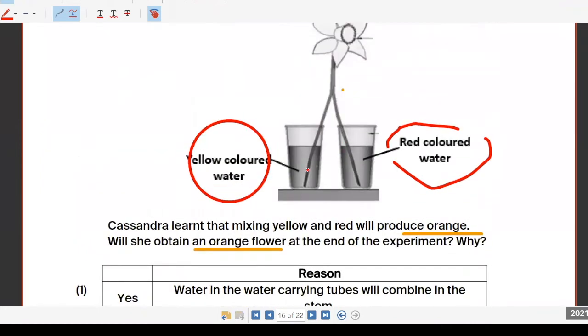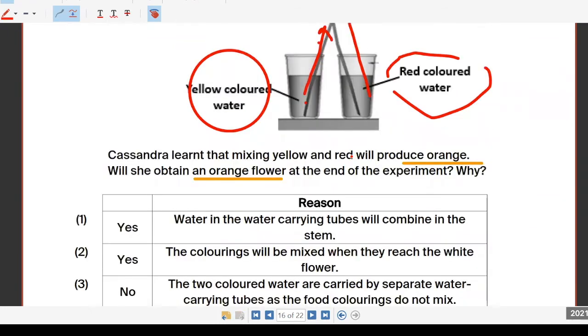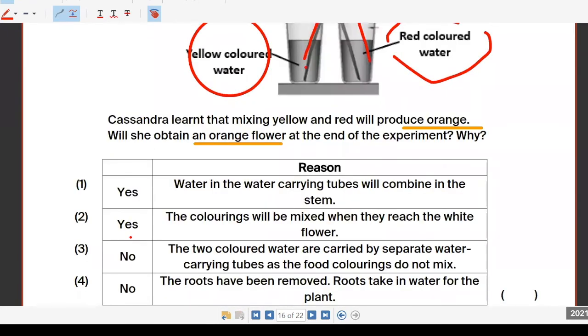The answer is three. The red colored water remains red colored water, the yellow colored water will be yellow colored water. The yellow colored water will go up these tubes on the left side and the red colored water will go up these tubes on the right side. So at the end your flower will not turn orange because they don't mix at all.